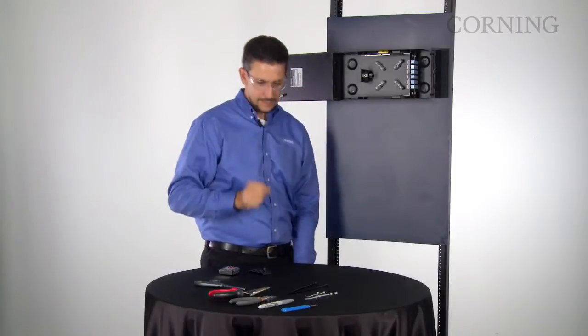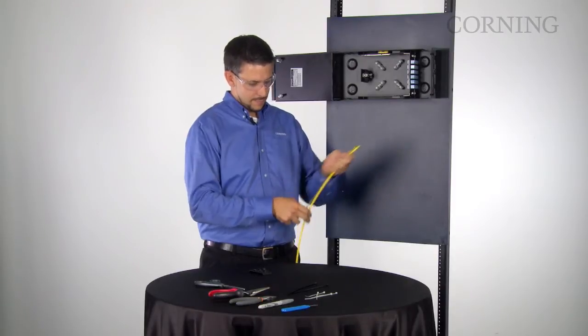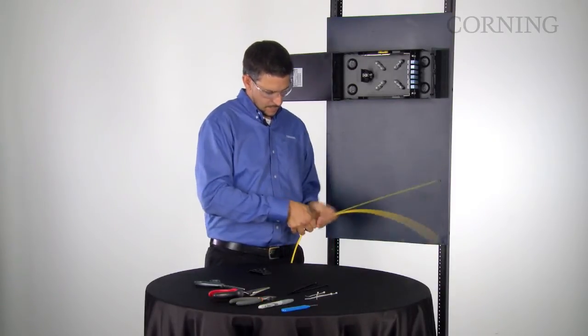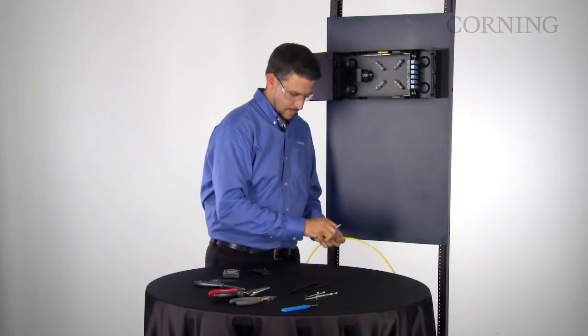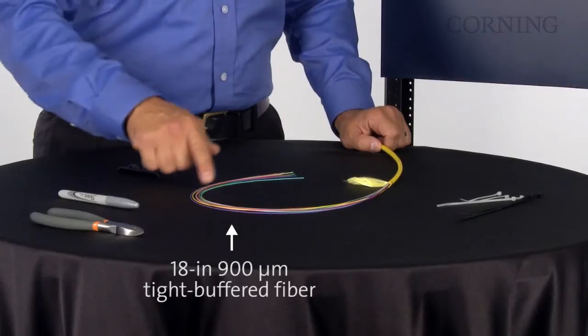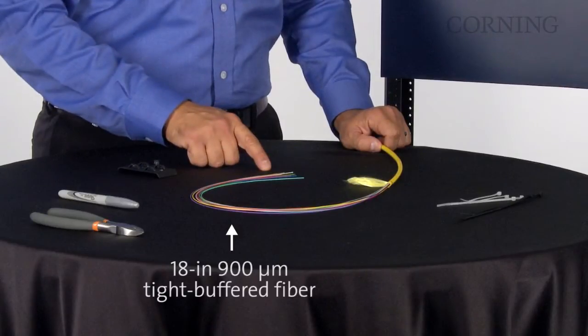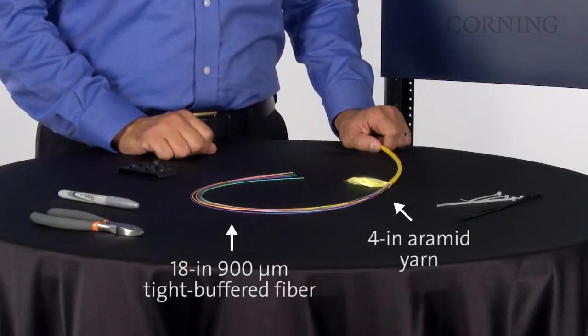Next, you will need to prepare the cable. You will need to have the following measurements: 18 inches of 900 micron tight buffered, four inches of strength member if available, and four inches of aramid yarn if available.